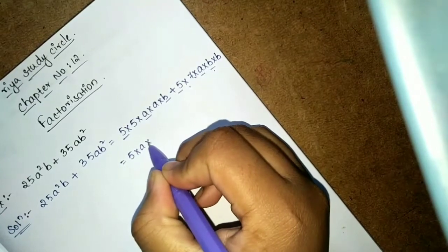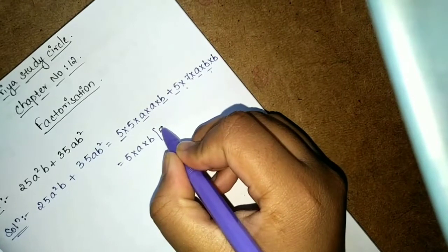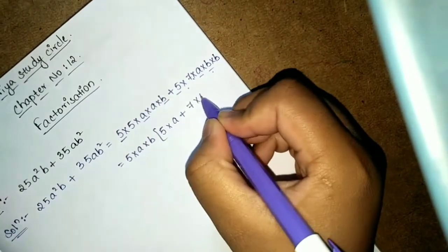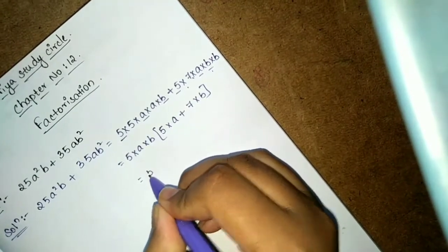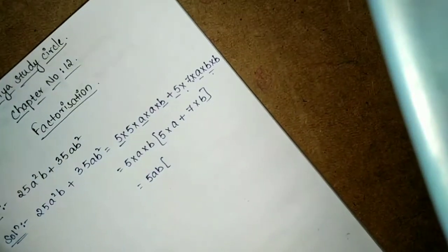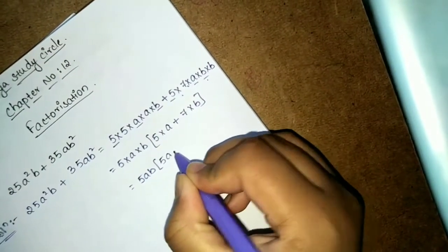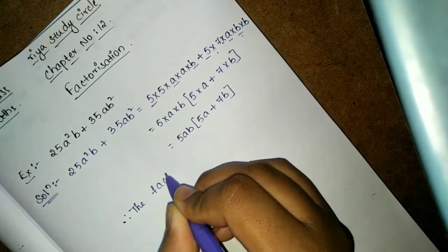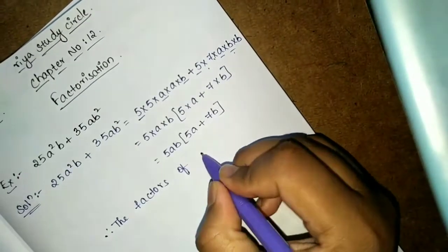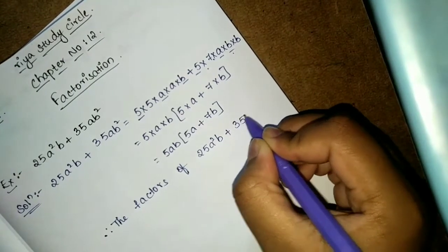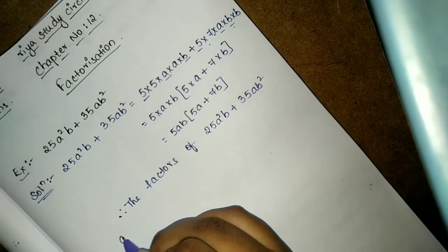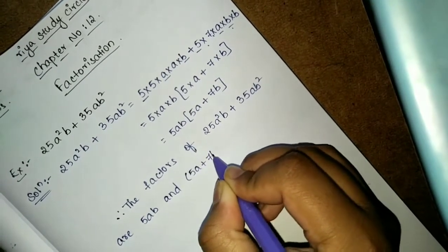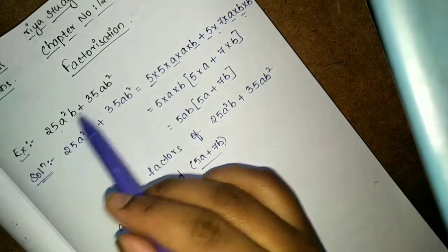Taking 5 × a × b common, we get: 5ab(5a + 7b). So the factors of the algebraic expression 25a²b + 35ab² are 5ab and (5a + 7b). These two are the factors of this algebraic expression.